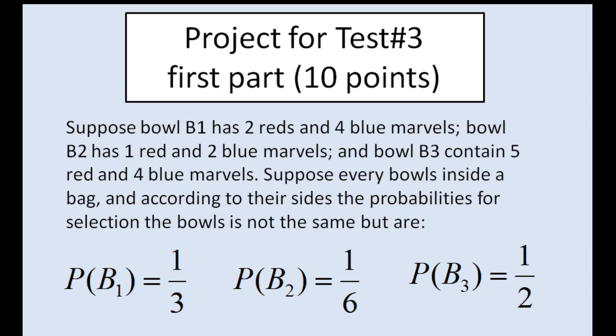Preparing for test number 3, first part, 10 points extra. Suppose bag B1 has 2 red and 4 blue marbles. Bag B2 has 1 red and 2 blue marbles. Bag B3 contains 5 red and 4 blue marbles. Every ball is inside the bag, and according to their size, the probability of selection is not the same. The probability of B1 is 1 over 3, probability of B2 is 1 over 6, and probability of B3 is 1 half.